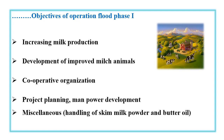Continuing the objectives of Operation Flood Phase 1: increasing milk production by improving breeding and developing better milk-yielding varieties of cows, along with better feeding and scientific management; development of improved milk animals; cooperative organization for handling, collection, marketing, and ensuring better returns and profit for farmers; project planning and manpower development for training better scientific manpower; and handling of skim milk powder and butter oil donated through the World Food Program, which was recombined, sold, and the proceeds used to fund the program.